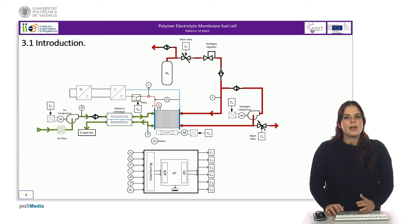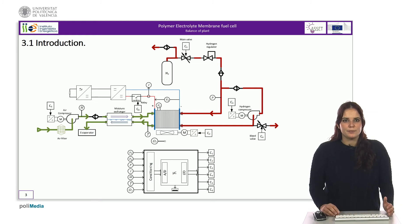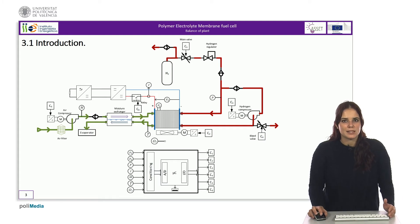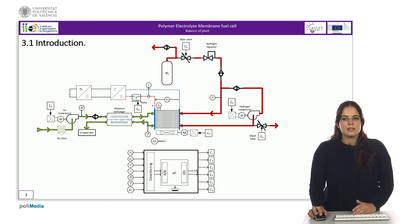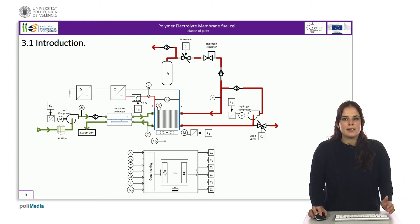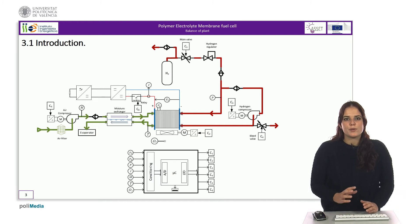In turn, the air must be supplied with the appropriate stoichiometric coefficient, usually 2 or higher. A compressor is used to provide the necessary flow and pressure to overcome the pressure drops in the stack. Depending on the size of the stack, this can be a few bars. In order to know precisely what the actual air flow rate is, it must be measured with a mass air flow meter. This information allows acting on the compressor motor through a continuous converter.